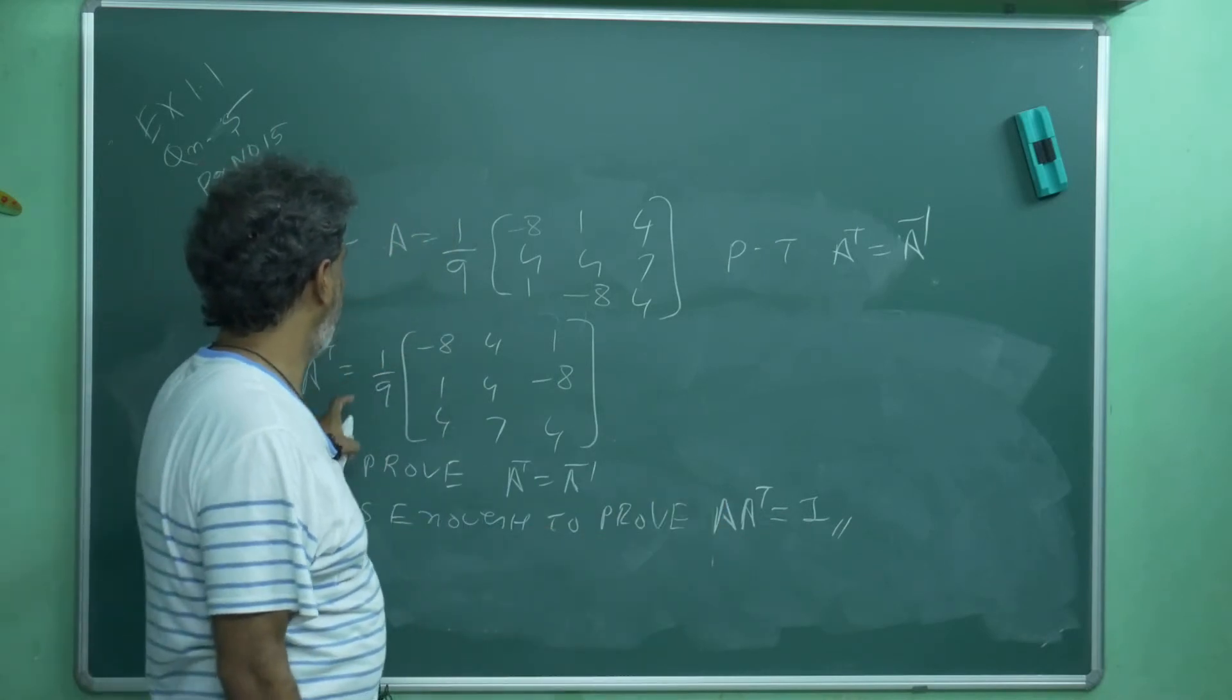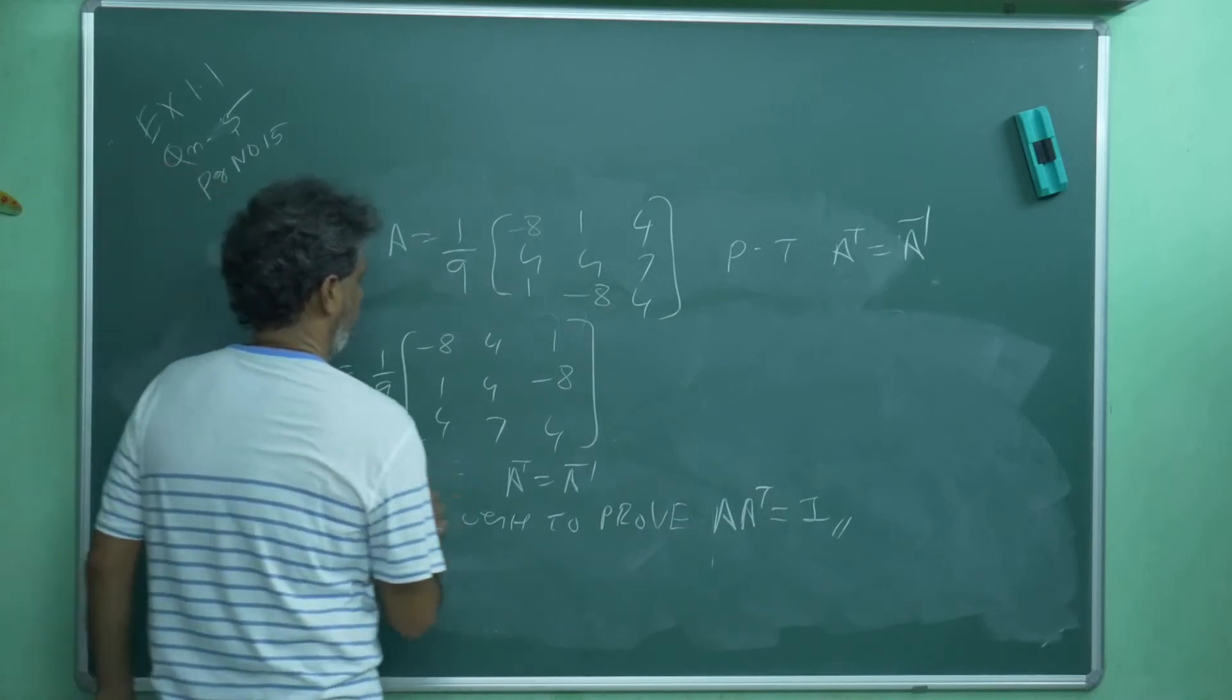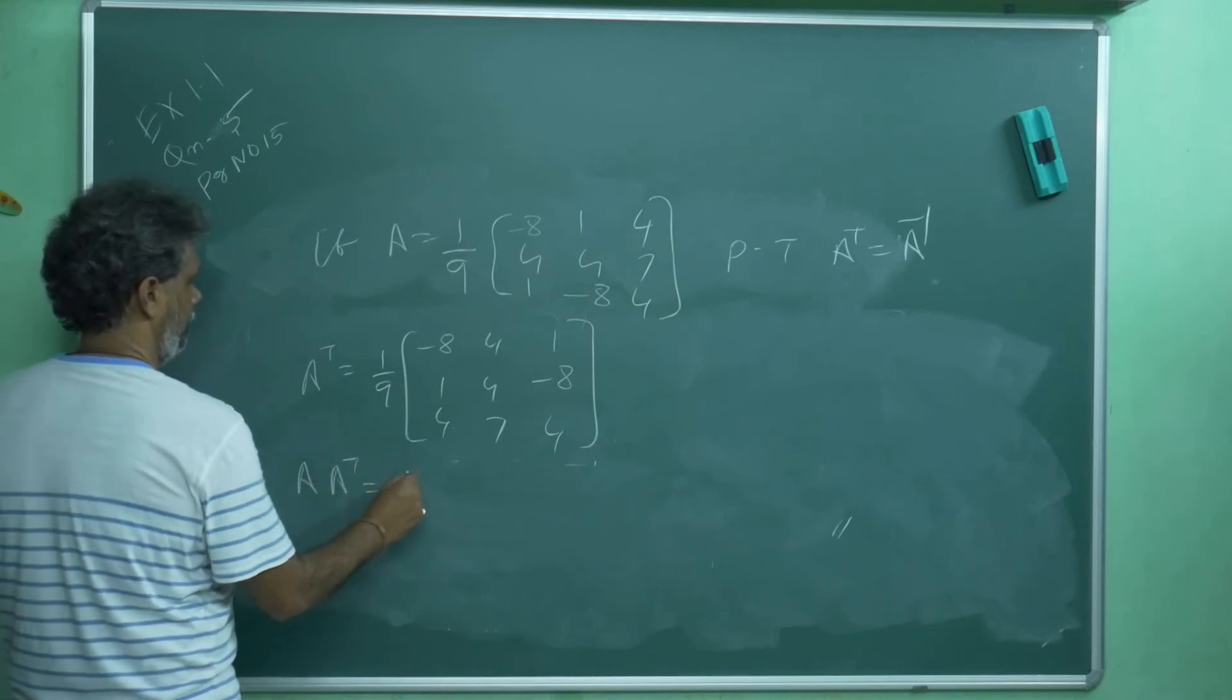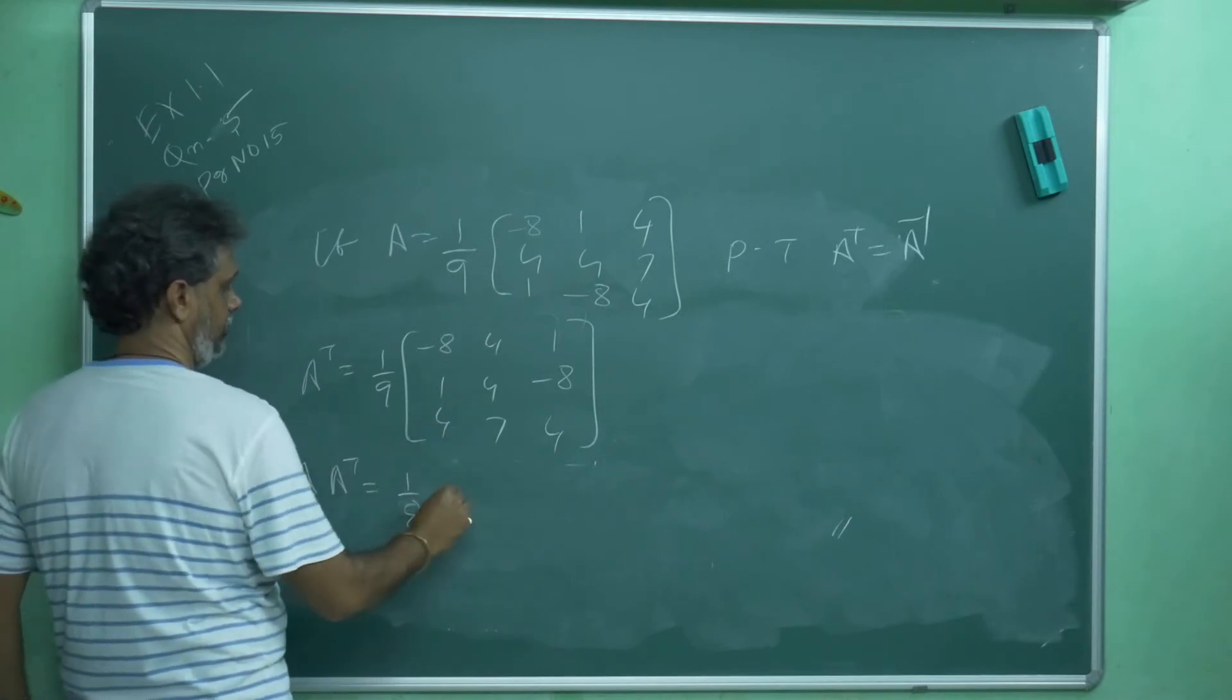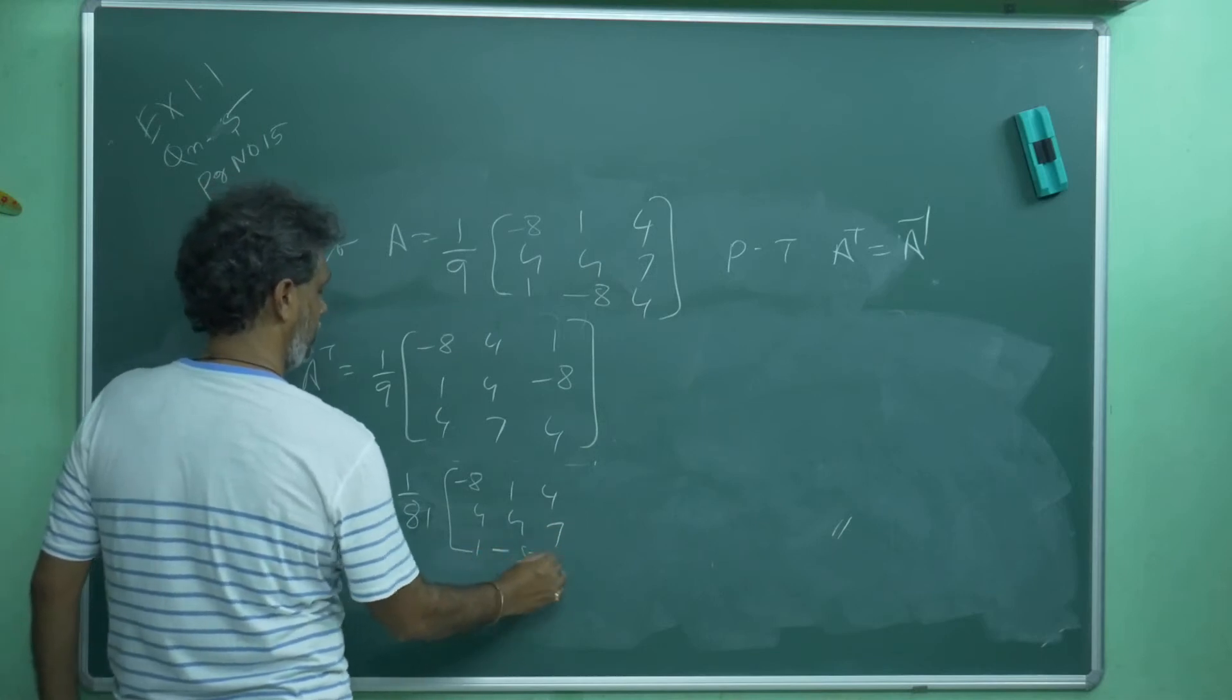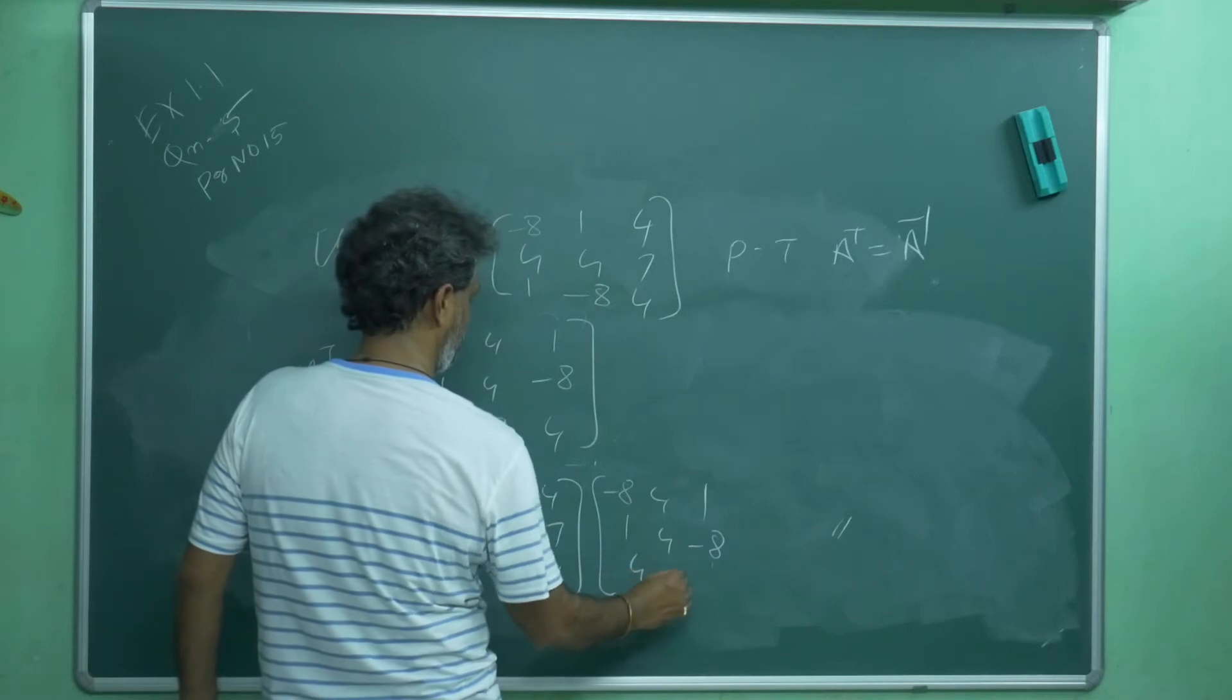A is in my hand. A T is in my hand. So what I will do? A into A T you can find out. What you will get? This is 1 by 9. That is 1 by 9. 1 by 9 into 1 by 9 is 1 by 81, common for all elements. A is minus 8, 1, 4, 4, 4, 7, 1, minus 8, 4.